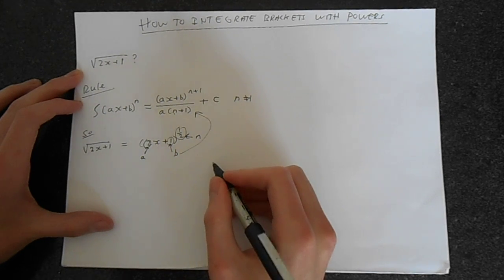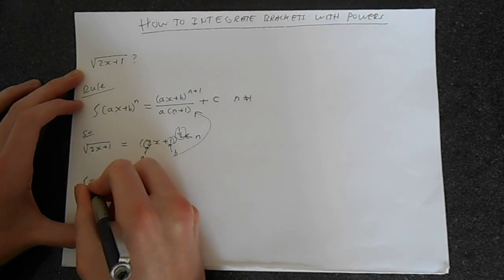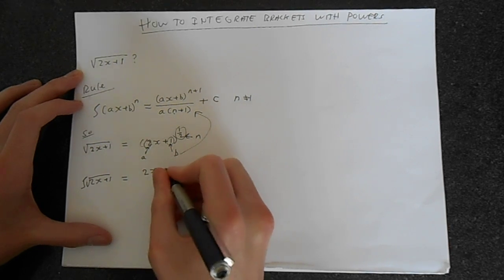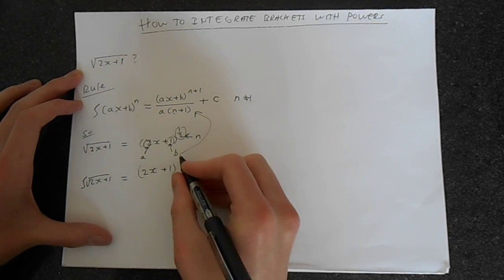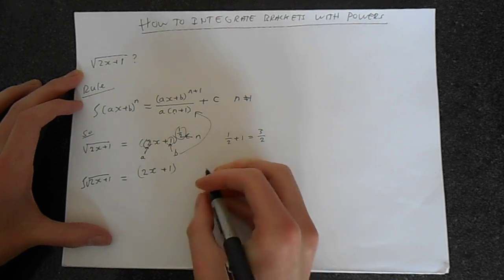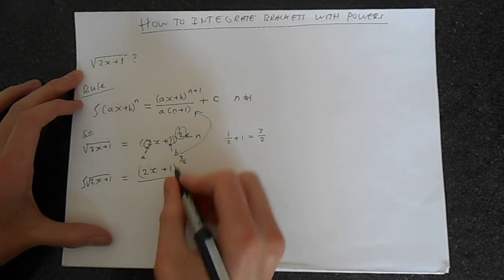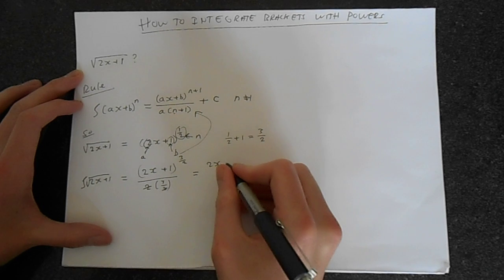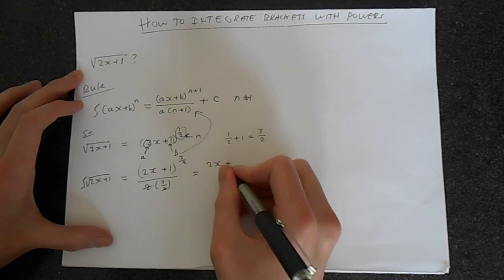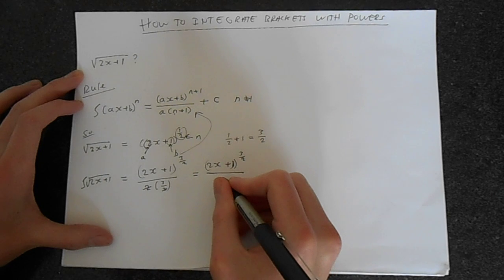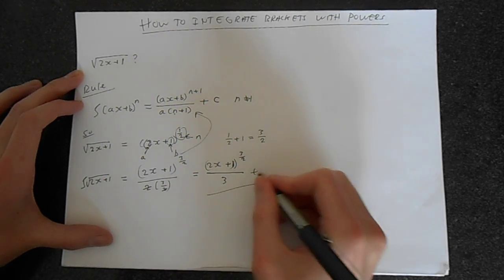If we substitute into the formula, the integral of the square root of 2x plus 1 equals 2x plus 1 to the power of one half plus 1 — that's n plus 1 which is 3 over 2 — all divided by a times n plus 1, which is 2 times 3 over 2. The 2's cancel, so we're left with 2x plus 1 to the power of 3 over 2, all divided by 3, plus c.